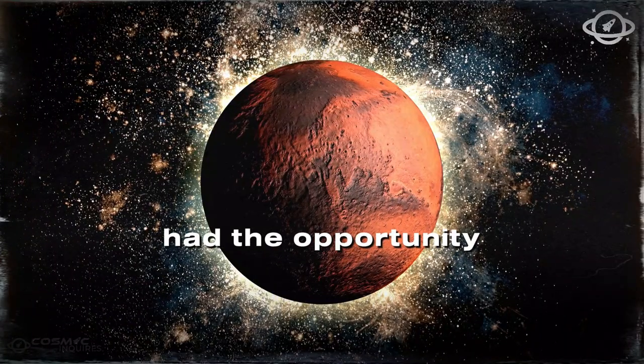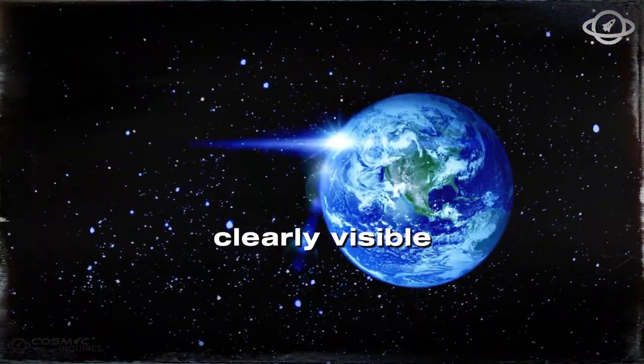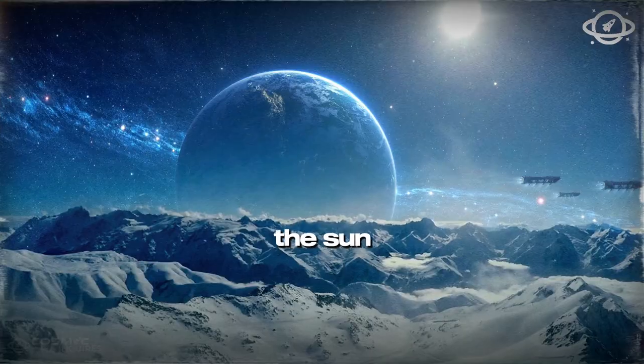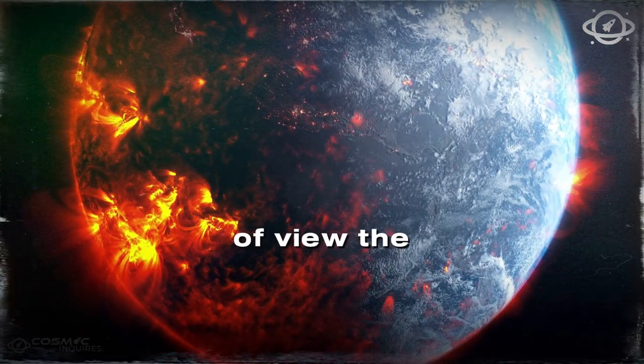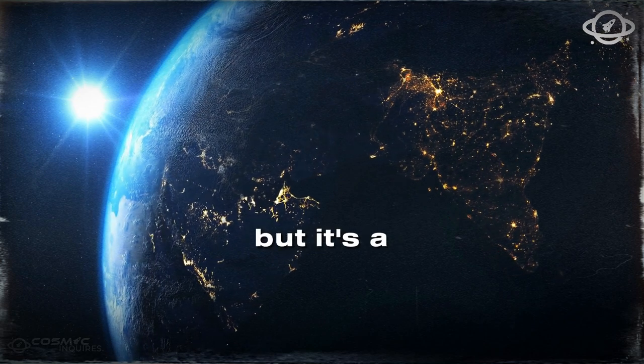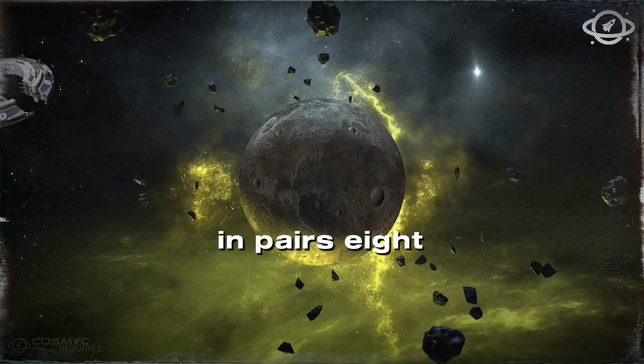I recently had the opportunity to observe Venus through a telescope, and the crescent shape was clearly visible. Since Venus orbits between Earth and the Sun, you might wonder if it ever eclipses the Sun from our point of view. The answer is yes, but it's a rare occurrence.